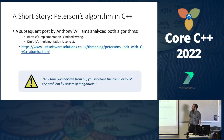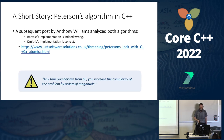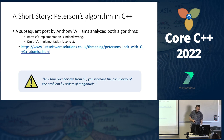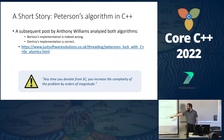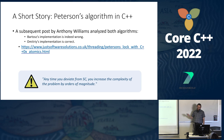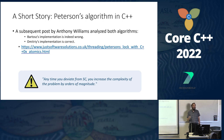Subsequently, Anthony Williams analyzed both algorithms and concluded that Bartosz's implementation was actually incorrect, and Dmitry's implementation is correct. But the more interesting side result: all these experts agreed that any time you deviate from sequential consistency, you increase the complexity of the problem by orders of magnitude — even experts don't really want to touch this because it becomes really, really hard.